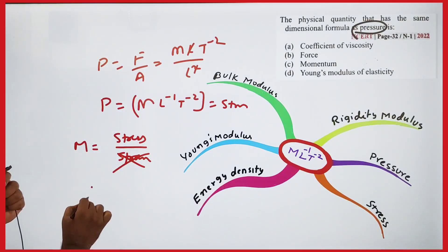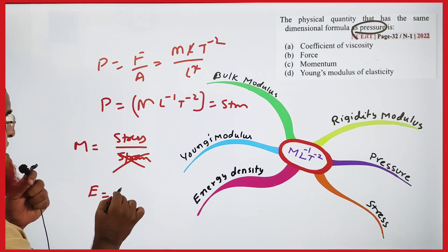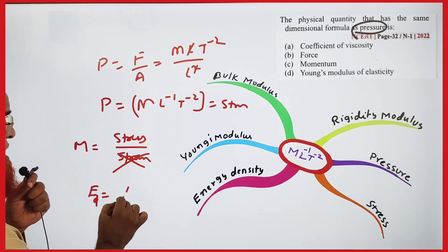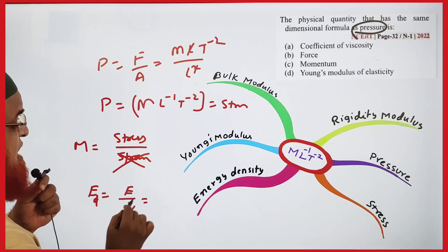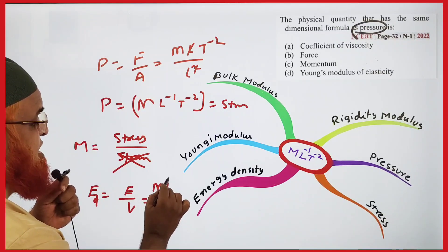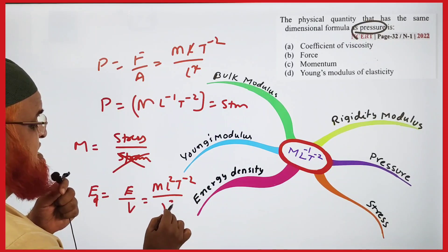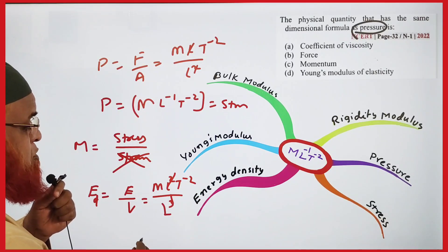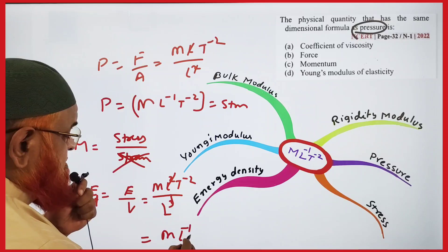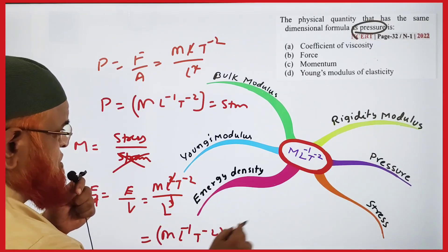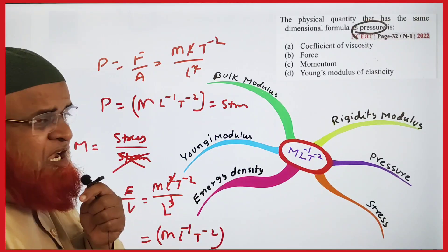What is the dimensional formula for energy density? Energy density is energy divided by volume. The formula for energy is ML^2T^-2 divided by volume which is L^3. L^2 and L^3 cancel to give ML^-1T^-2. So all these terms have the same dimensional formula.